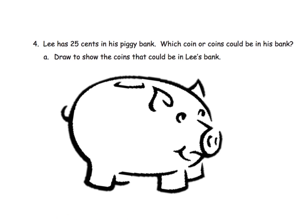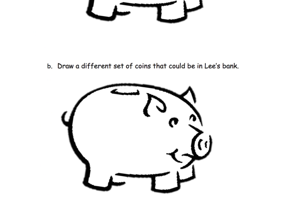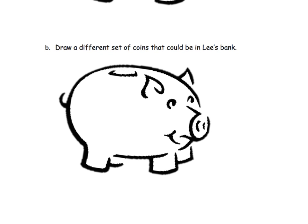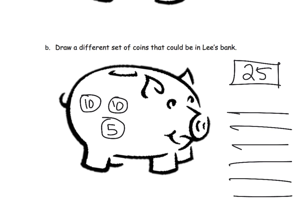Here's a little bit of problem solving. It says Lee has 25 cents in his piggy bank — which coin or coins could be in his bank? Since this is a new lesson about quarters, one way he could have 25 cents is simply having a quarter. But now we're supposed to ask: what's a different way that would also give us 25 cents? A classic way — not the only way — is two dimes and a nickel. Parents and teachers, this is a great opportunity to let your students get into the joy of problem solving and list all the different ways to make coins with a value of 25 cents. One way would be having 25 pennies, and another way would be just one quarter.